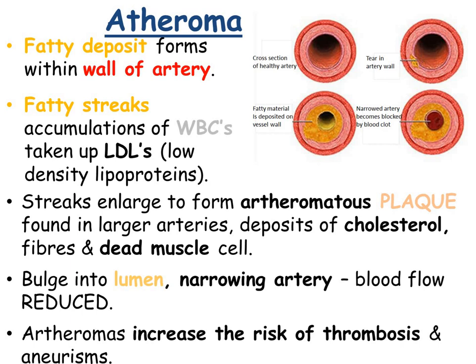Atheromas are found in the larger arteries and are deposits of cholesterol, fibres, and dead muscle cells. They start to bulge into the lumen, which narrows the artery and reduces blood flow to that part of the heart. This build-up of atheromas — the fatty or cholesterol deposits — actually increases the risk of both thrombosis and aneurysms.